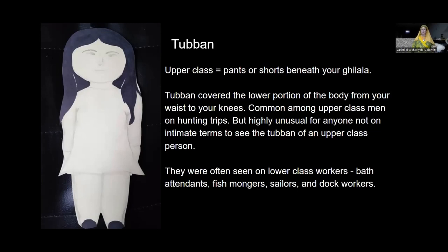Tubin is pants or shorts — typically knee length or shorter — that you wear beneath your gilala. Men frequently wore these as far as I can tell; it was considered very common among upper-class men on hunting trips because it's easier to move in, but it would be unusual for anyone not on intimate terms with you to see an upper-class person's tubin. In later period paintings you see them on lower-class workers all the time — bath attendants, fishmongers, sailors, dock workers in shorts. That's the tubin. I don't have images showing underclothing for this time period, so I'm connecting that later visual to this word.